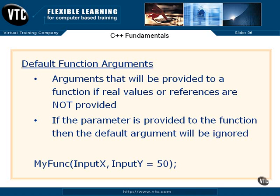So take a look down here at myfunc. We have an input x and an input y — two different parameters that are supposed to come in there. But there we have a default function argument on input y that's equal to 50.